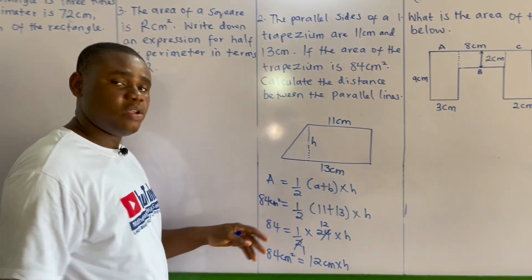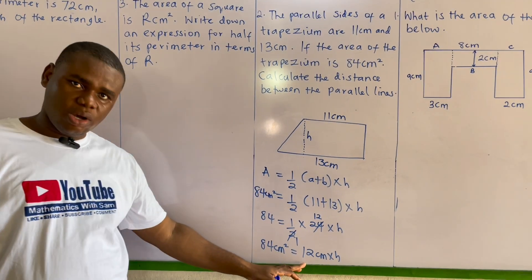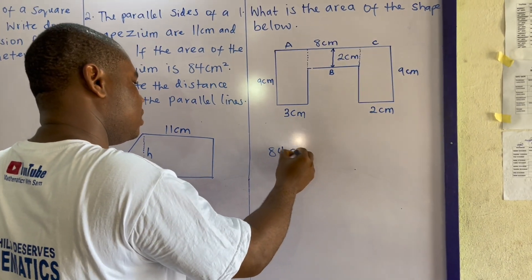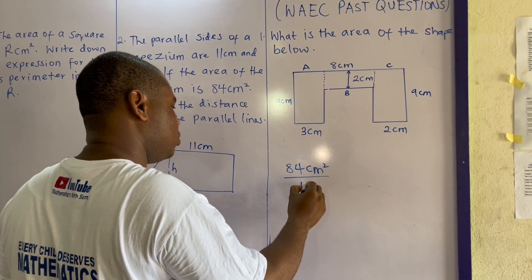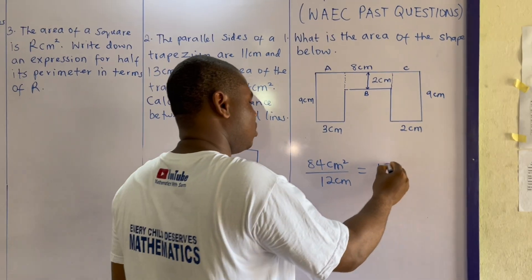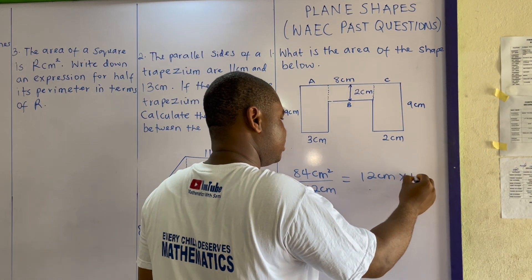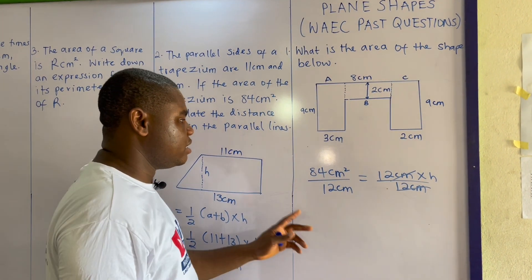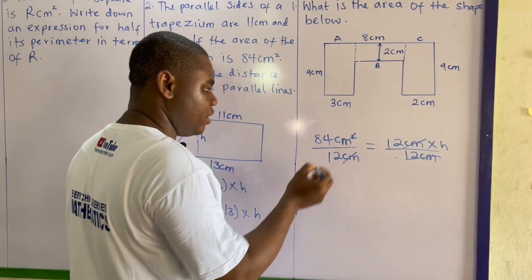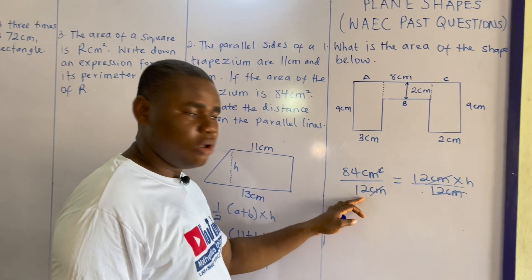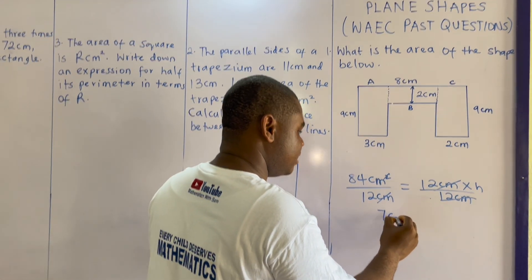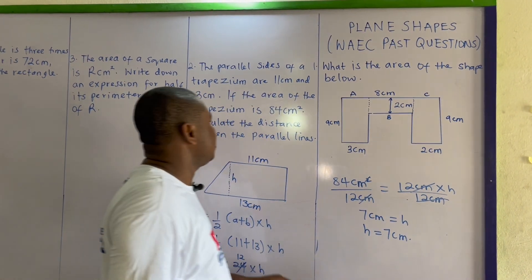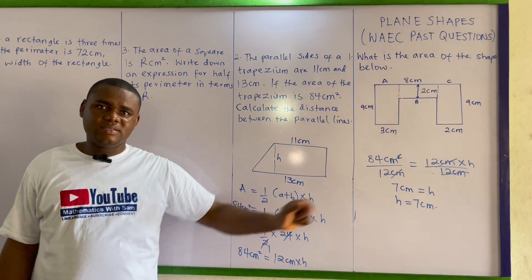So 84 centimeters squared equals 12 centimeters times h. Dividing both sides by 12 centimeters: 84 divided by 12 equals 7. Therefore h equals 7 centimeters, meaning the distance between the parallel lines is 7 centimeters.